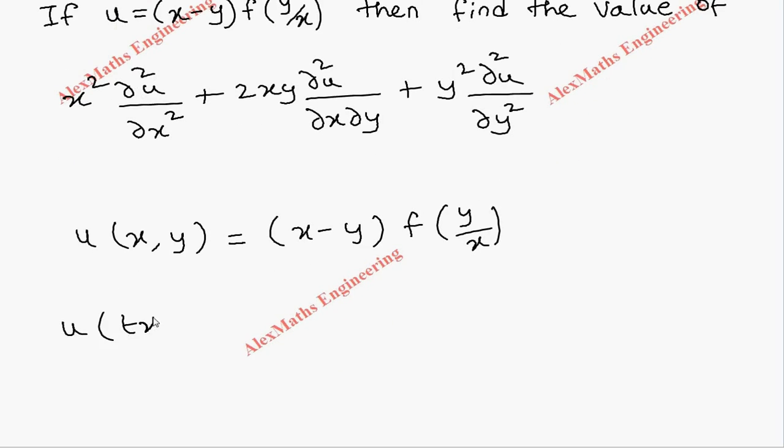So this will become tx minus ty into f of ty by tx. Now you can cancel this t, and from the first term it is possible to take t common, so we become x minus y into f of y by x.